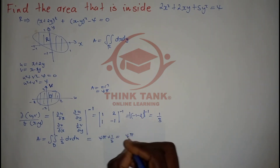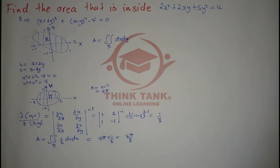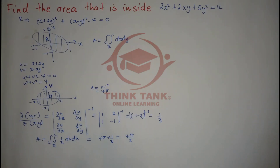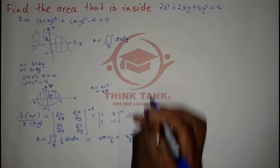That means the area is 4π/3. Be careful — some lecturers may not give full marks using this shortcut. In multivariable calculus they want you to calculate the area using double integrals with cylindrical coordinates. Check the description for a playlist on cylindrical and spherical coordinates, and there's also a Google Drive link with multivariable calculus questions — the password is in the description.